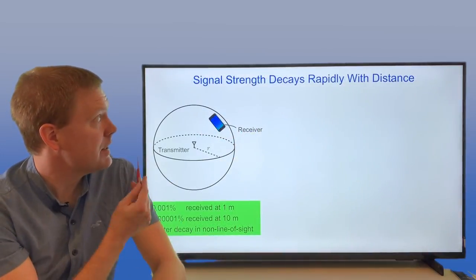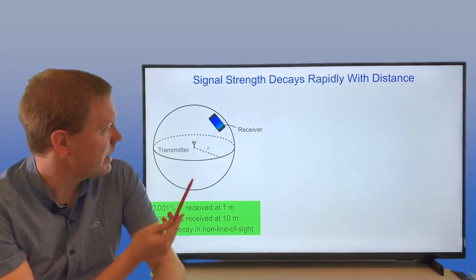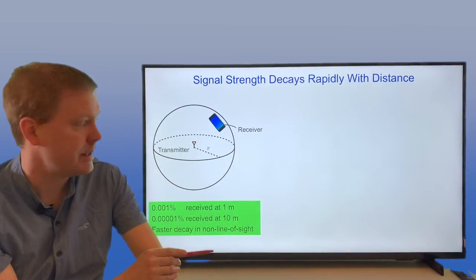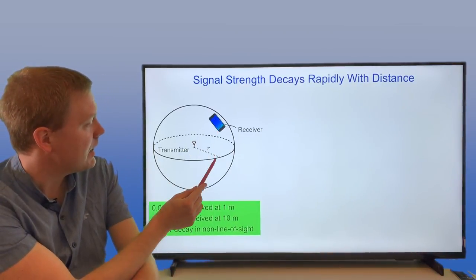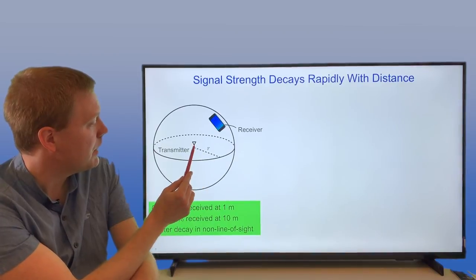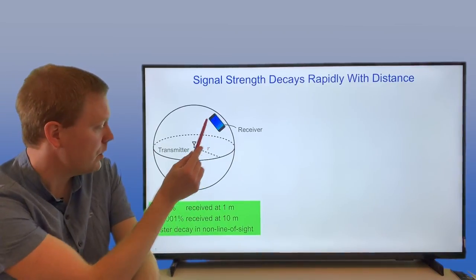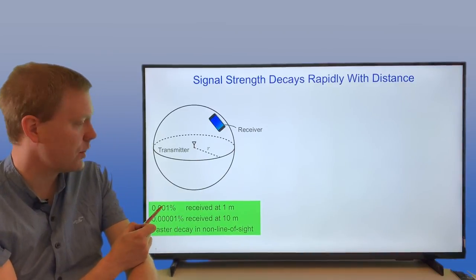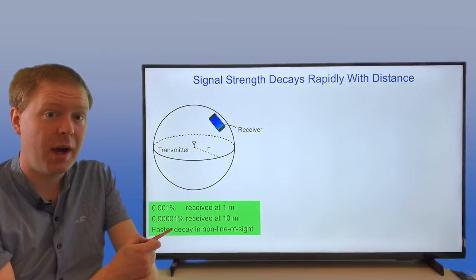Well, the signal strength when you're transmitting from a point towards the user is rapidly decaying with the distance. If the distance is r from the transmitter to the phone, then at the distance of 1 meter, only 0.001% of the power will be received.